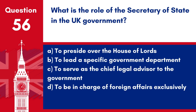Question 56. What is the role of the Secretary of State in the UK Government? A. To preside over the House of Lords. B. To lead a specific government department. C. To serve as the chief legal advisor to the government. D. To be in charge of foreign affairs exclusively. Answer: B. To lead a specific government department. The Secretary of State in the UK Government is responsible for leading a specific department, such as health, education or defence.